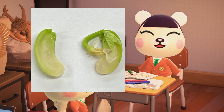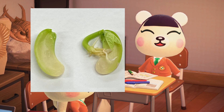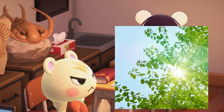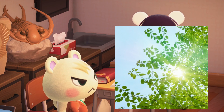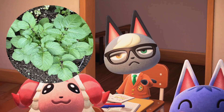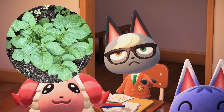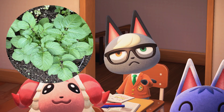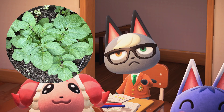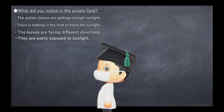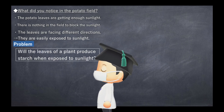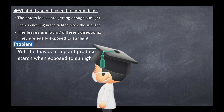I think starch is necessary for plant growth as well as germination. I think starch is formed when exposed to sunlight. The potato leaves are well exposed to sunlight — when the leaves are exposed to sunlight, I wonder if the starch necessary for growth can be produced in the leaves.